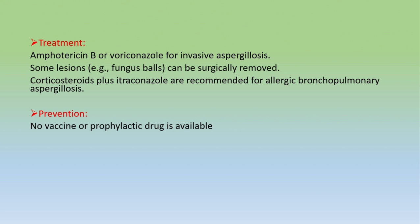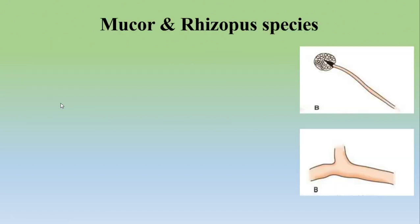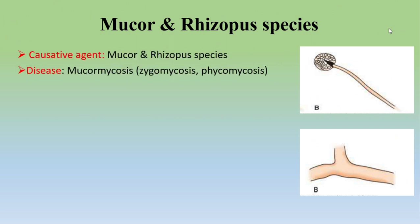Prevention: no vaccine or prophylactic drug is available for aspergillosis. This concludes the discussion of aspergillosis — its pathogenesis, clinical findings, diseases, species, treatment, and prevention. The fourth and last opportunistic mycosis is Mucor and Rhizopus species. These species are causative agents of the disease mucormycosis, also known as zygomycosis or phycomycosis.